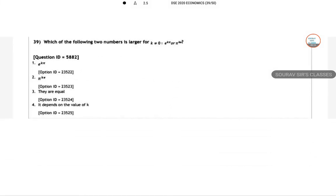Which of the following two numbers is larger for k ≥ 0: e^(kπ) or π^(ke)?